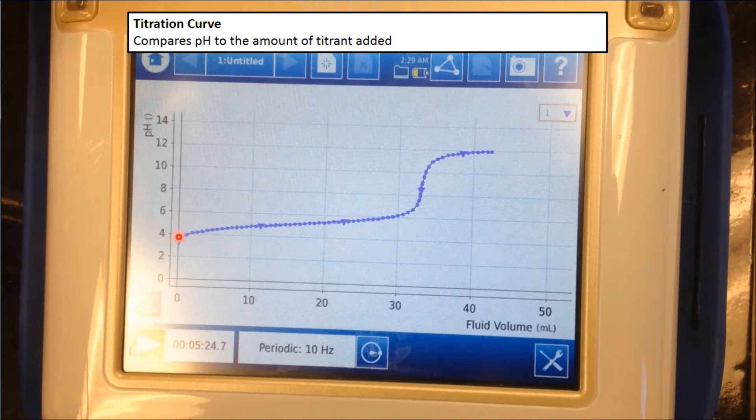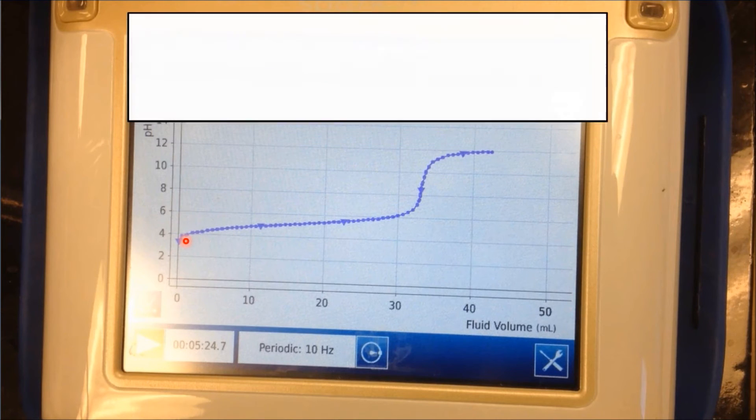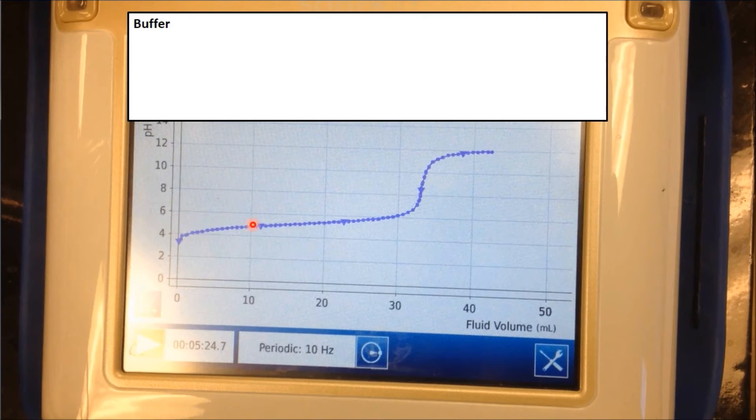The first point on our titration curve is right here, and it signifies the pH of the acetic acid before any NaOH was added. So that would be around 3.5 maybe. The next part of our titration curve is the buffer region. This region right here is when the pH doesn't change much and it's relatively flat. It can only occur when there's something weak, so like a strong acid and a weak base, a weak acid and a strong base, or even a weak acid and a weak base. In our case, we were titrating a weak acid with a strong base, acetic acid and NaOH, basically.